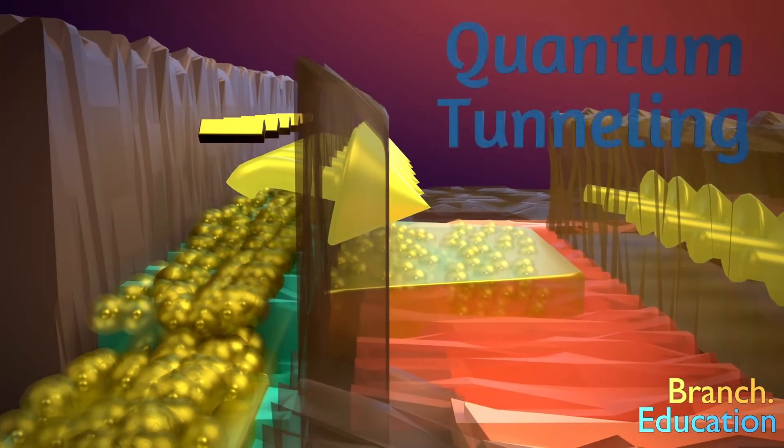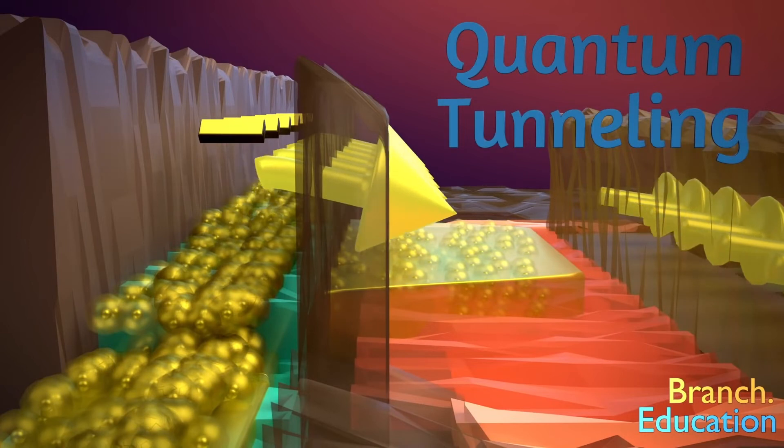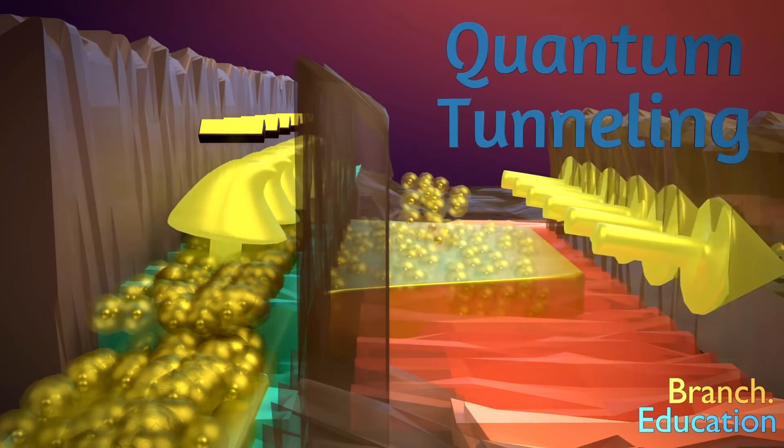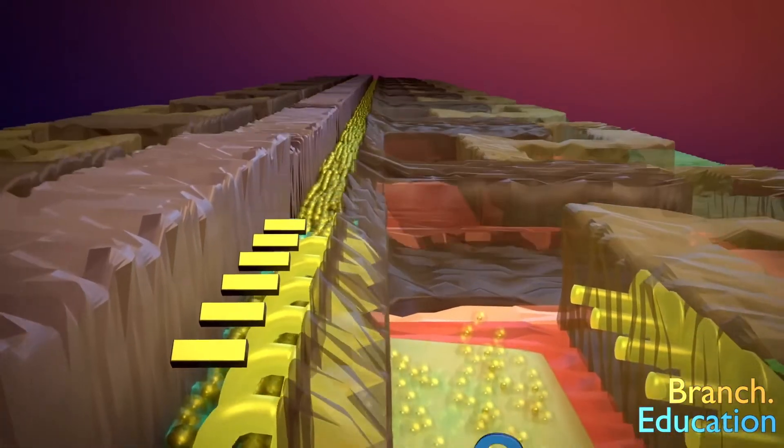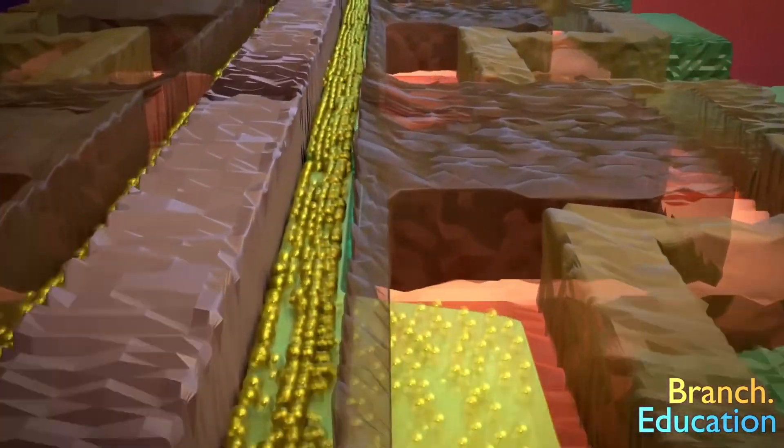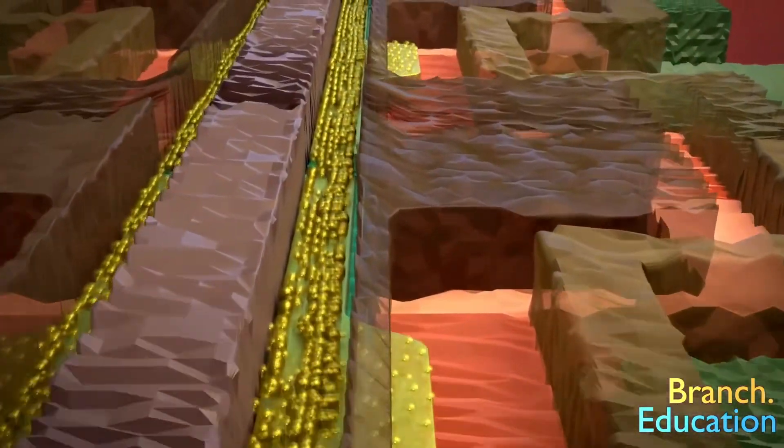This is called quantum tunneling because we can imagine that the electrons tunneled through the dielectric mountain range rather than going over the peaks. And every time you take a picture, your smartphone uses this phenomenon to write information to the charge trap flash memory cells.